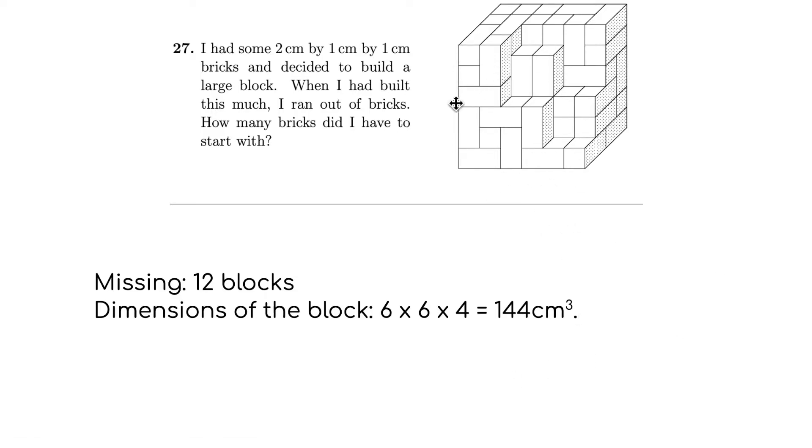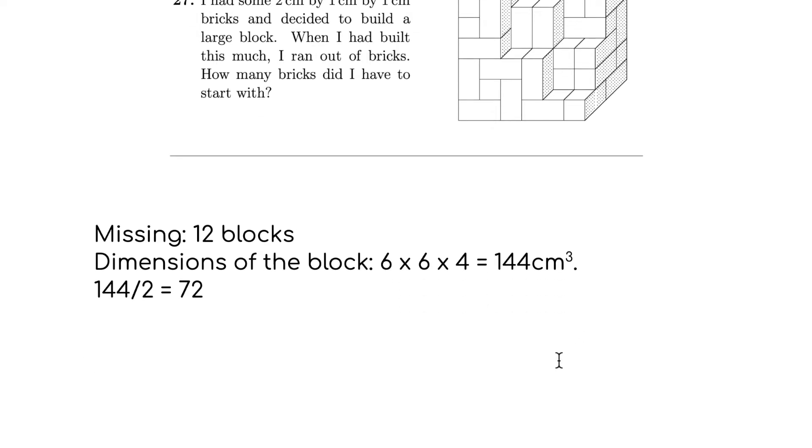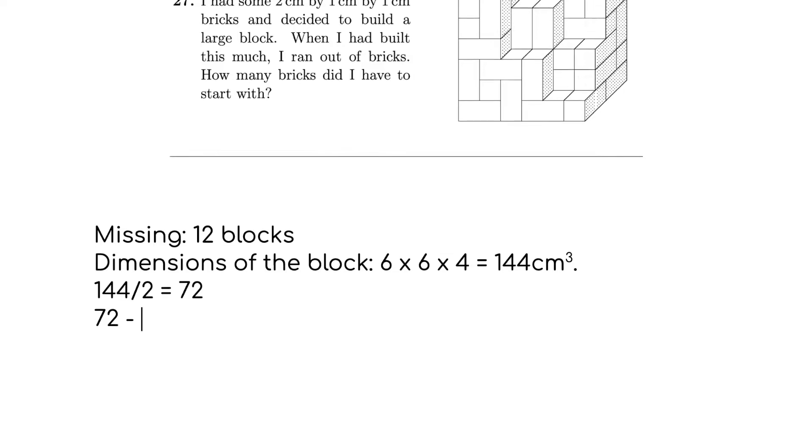Now we need to find out how many blocks in total to make this big block. So we need 144 centimeters cubed. Every block is two centimeters cubed, because it's two times one times one. So that means 144 over two equals 72. So there's 72 blocks for the big block. We've got 72, and then minus the number of missing blocks, that's 12. We get a total of 60. So the answer is 60.